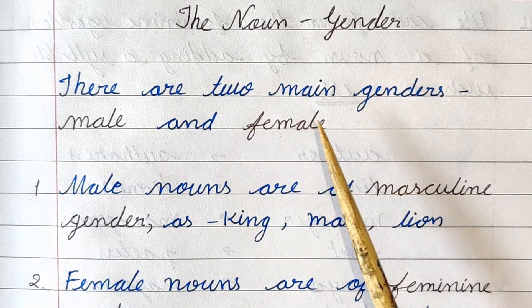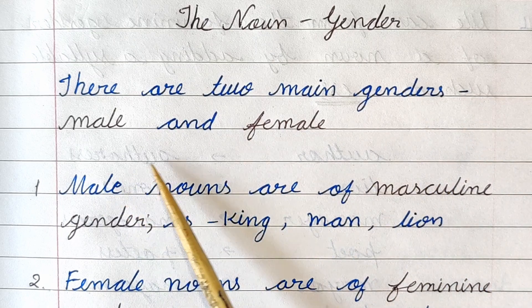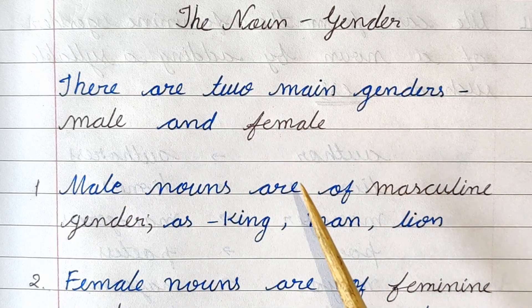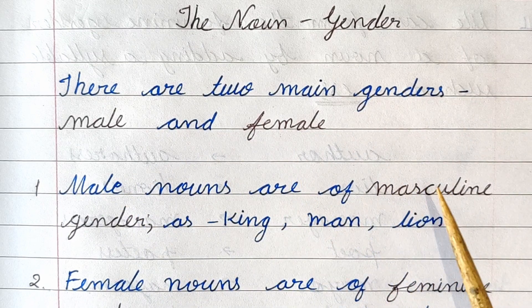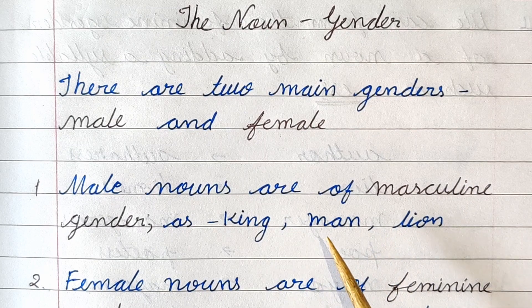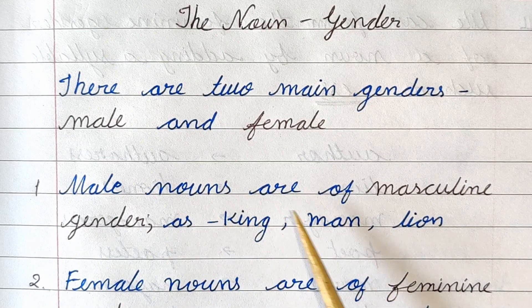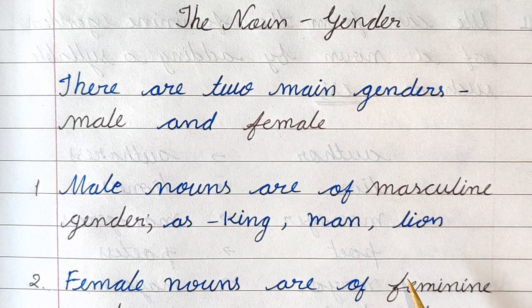There are two main genders: male and female. Purush Vachak and Stri Vachak. Male nouns are of masculine gender — for example, king, man, lion.